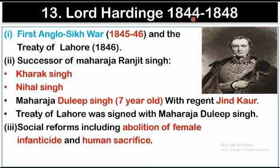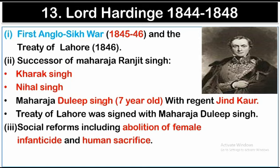The thirteenth Governor-General was Lord Hardinge, whose tenure was from 1844 to 1848. During his tenure, the First Anglo-Sikh War was fought between 1845 and 1846, ending with the Treaty of Lahore signed in 1846. After the death of Maharaja Ranjit Singh in 1839, his successors included Khadak Singh and Nihal Singh, after which the young Duleep Singh sat on the throne at only seven years old under the regency of Jindan, his mother. The Treaty of Lahore was signed between Maharaja Duleep Singh and Lord Hardinge. Social reforms during his tenure included the Abolition of Female Infanticide and Human Sacrifice.